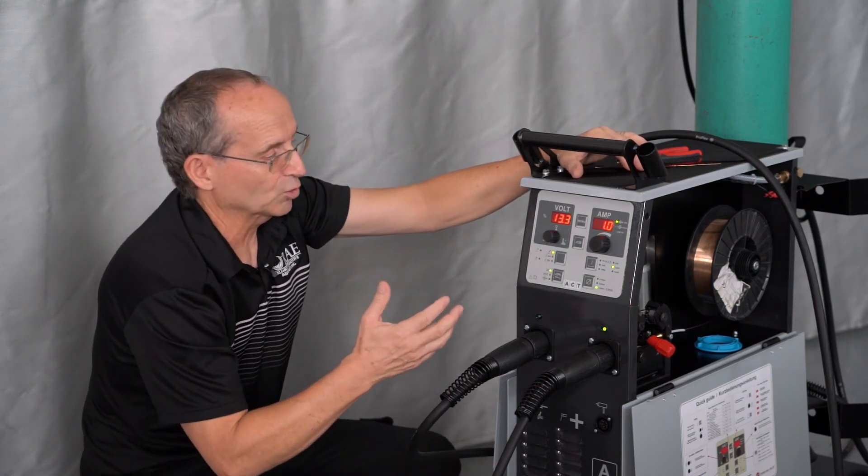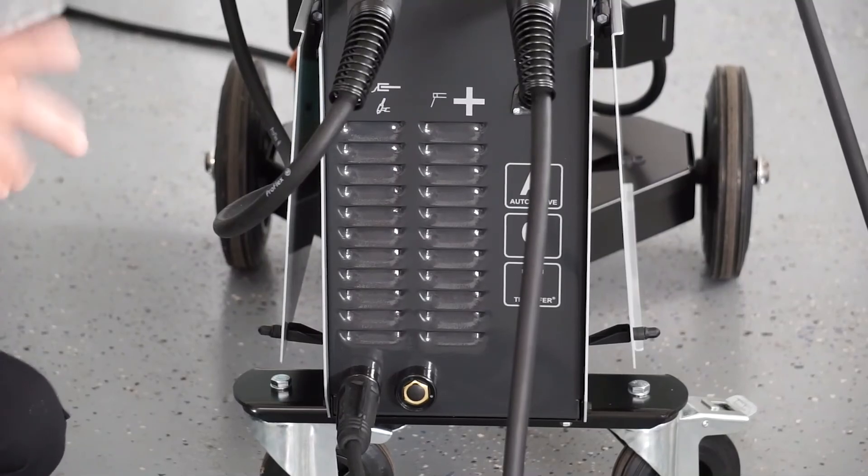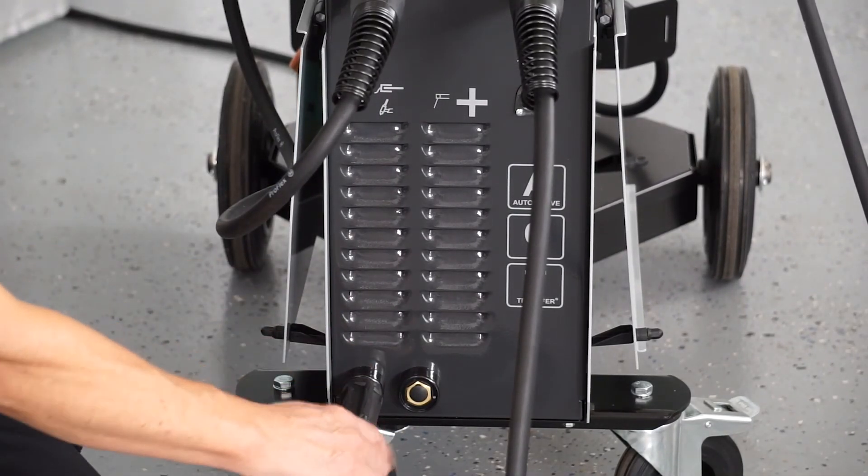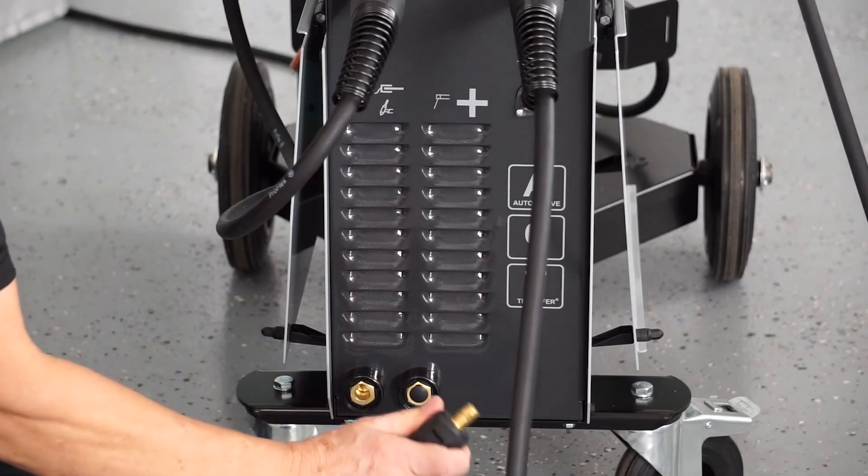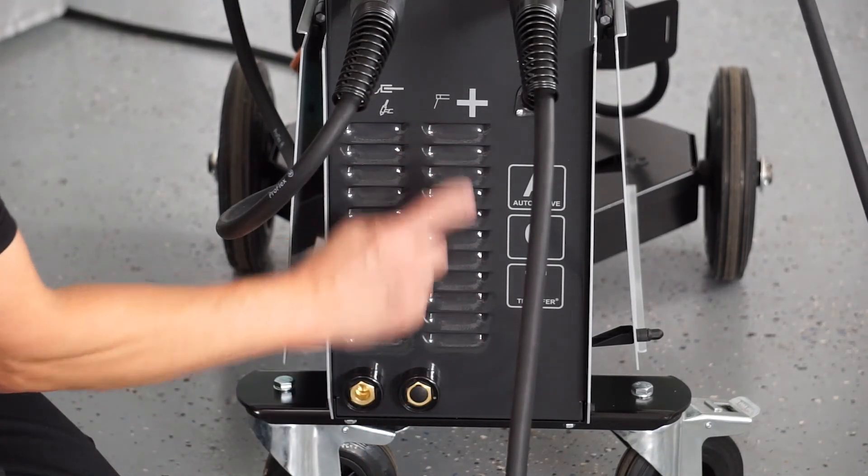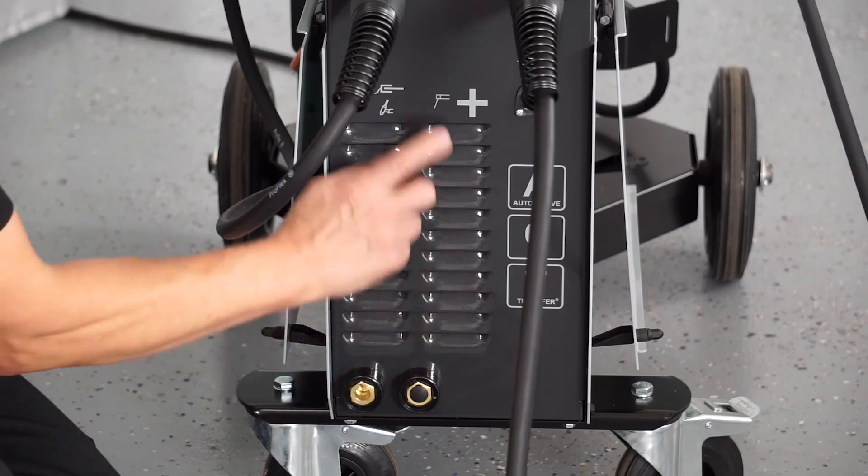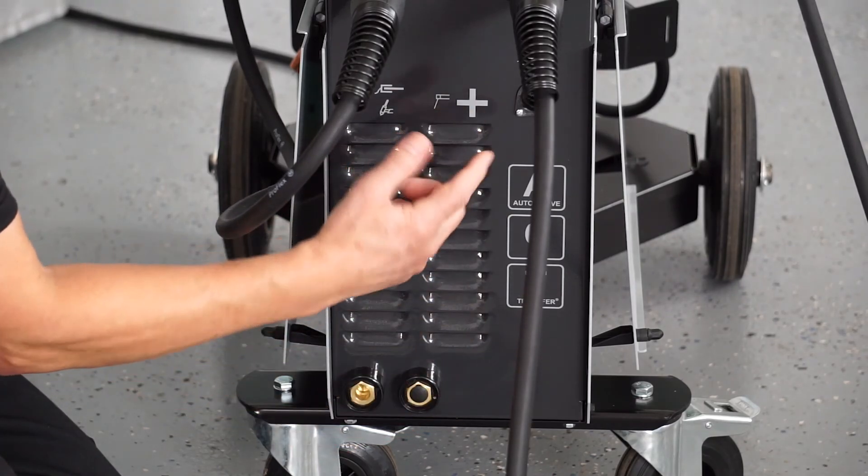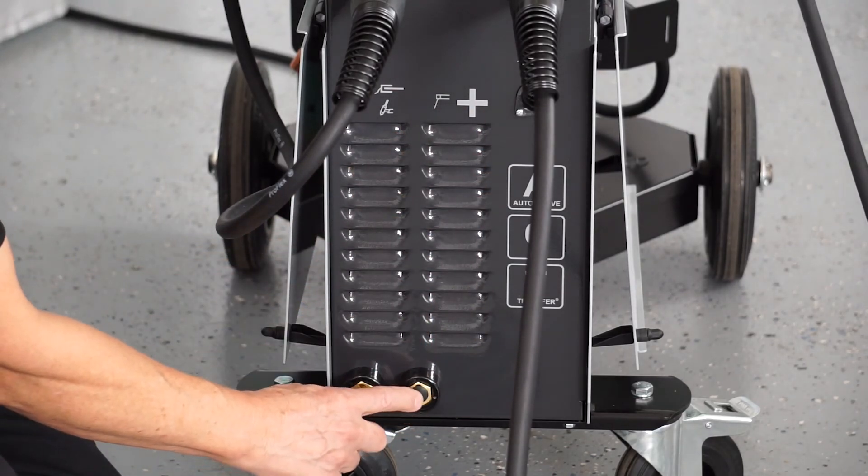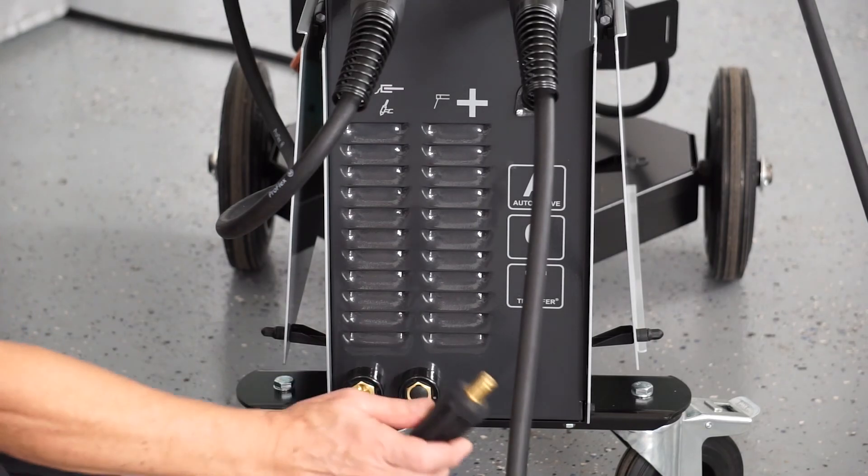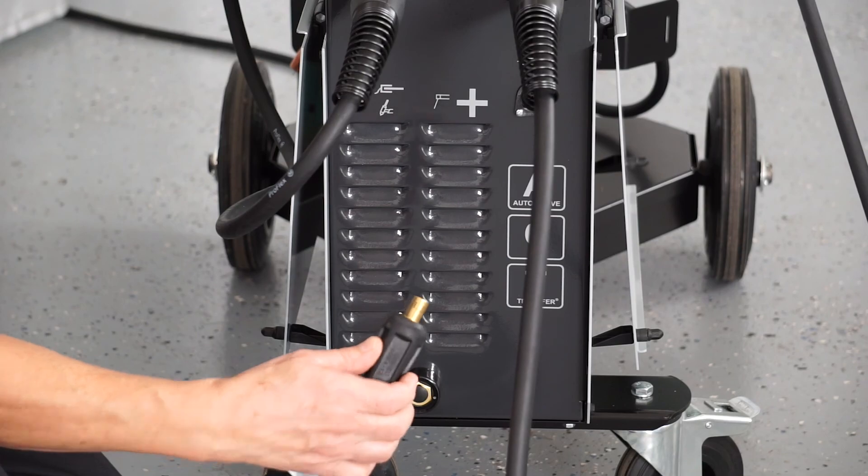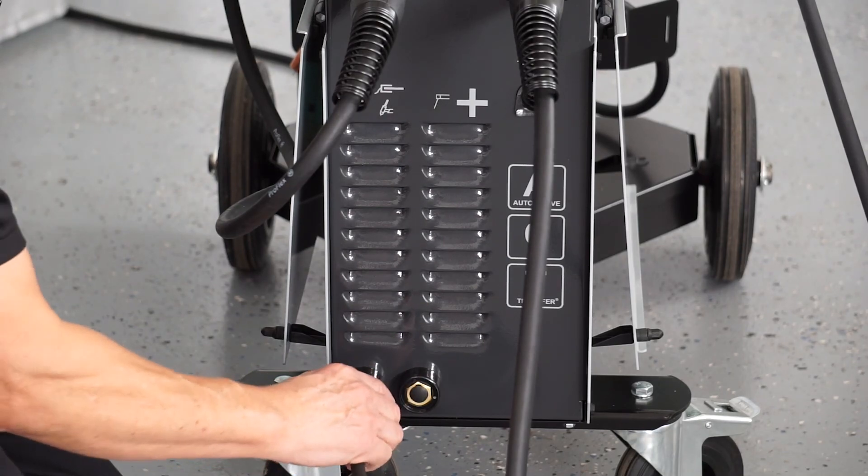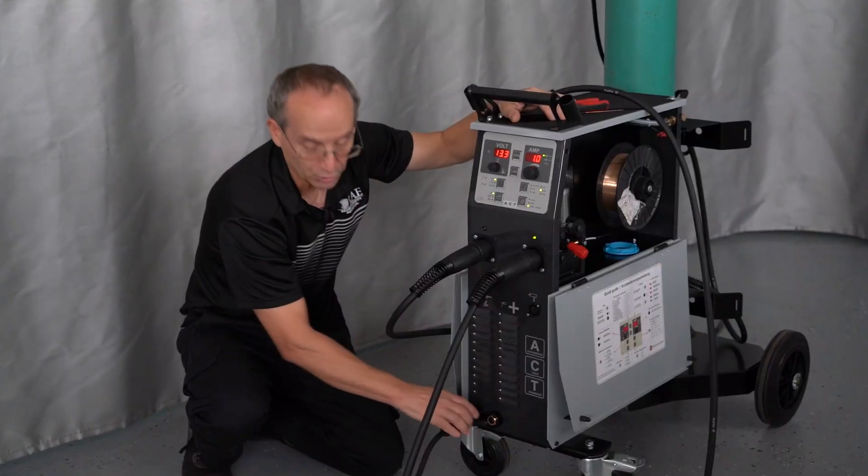Once you have everything set up on here, the last thing we're going to do is talk about the ground clamp. So on ground clamp area, if we look above this, this is negative on this side. This is positive on this side. This is used for doing the stick welder or the TIG welder setup. This is blocked off so you can't accidentally put your ground wire onto the positive side. This is just like a standard ground wire on your MIG. Put it in, turn it to lock it, and you're set with your ground.